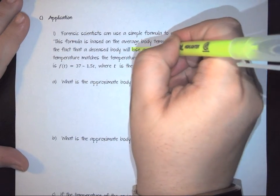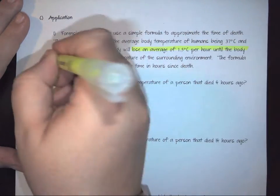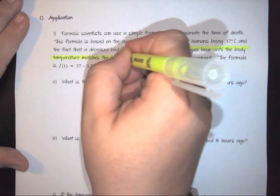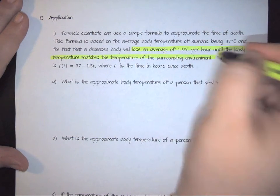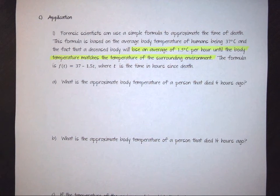So that sentence right there, lose an average until the temperature matches the temperature of the surrounding environment, is extremely important because what that means is that your body temperature will essentially stop dropping once it hits whatever your room temperature was. So for example, if the temperature of your room was 72 degrees and you came home from vacation and found a dead body